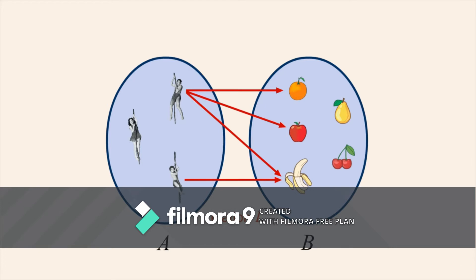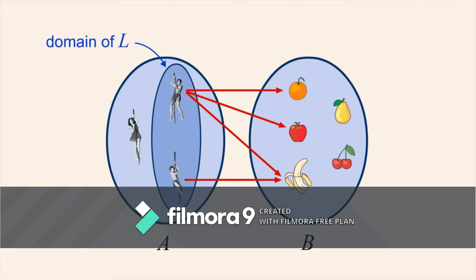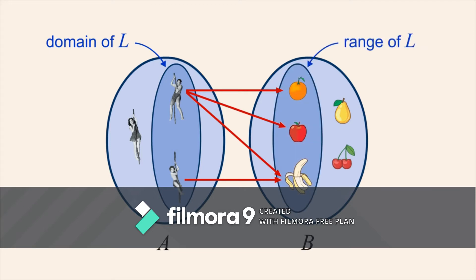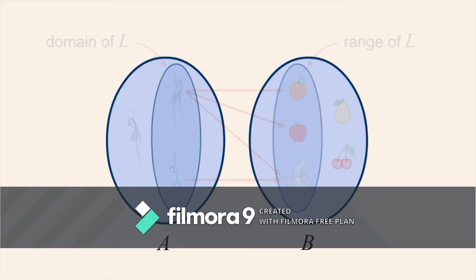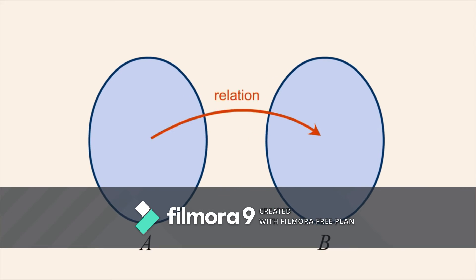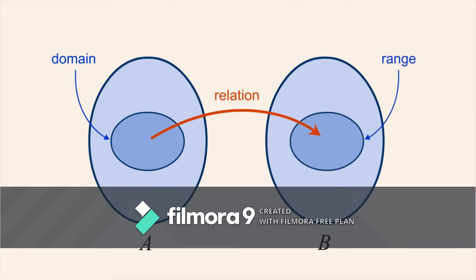The set of all elements of A which are L-related to elements of B is called the domain of L. Likewise, the set of all elements of B to which the elements of A are related is called the range of L. So in a binary relation from A to B, the domain and range are subsets of A and B respectively.